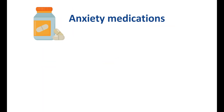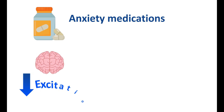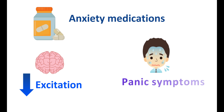Based on these types, we have different anxiety medications that reduce the symptoms of fear and tension. Anxiety medications can work in different ways — some act on the brain to reduce excitation, resulting in reduced stimulation of anxiety symptoms, while others relieve panic symptoms like rapid heartbeats and sweating. In this video, we are going to discuss the top anxiety medications and their advantages and disadvantages.